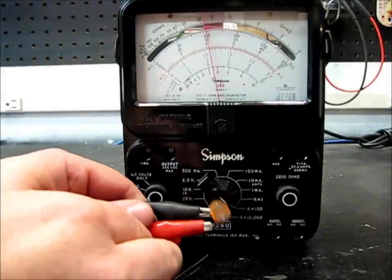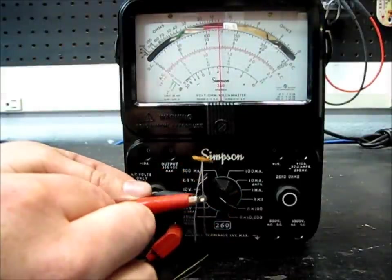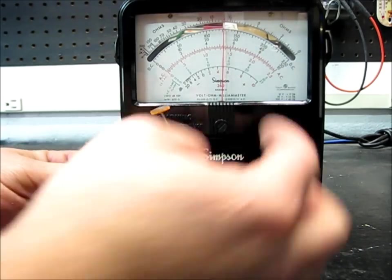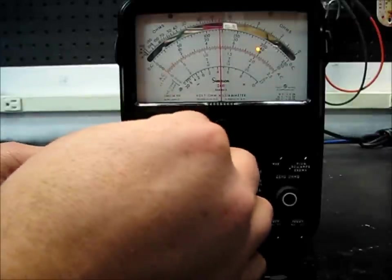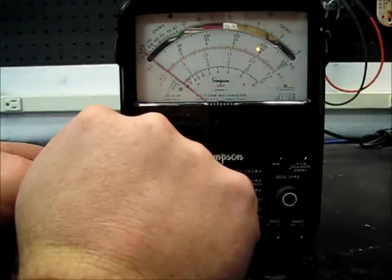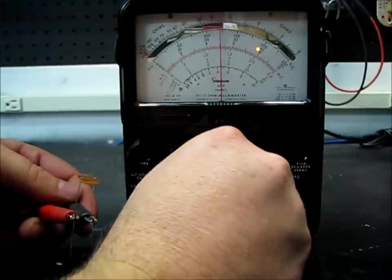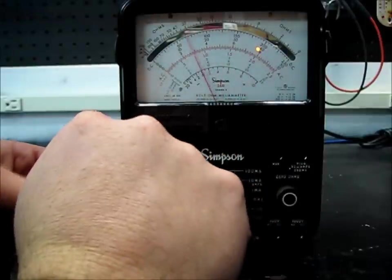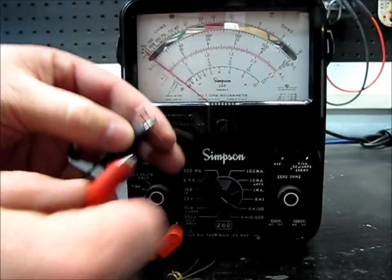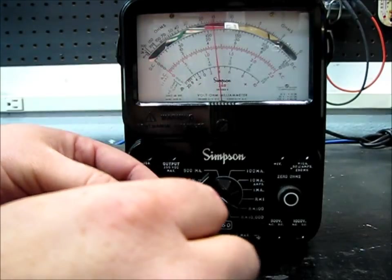When the LDR is pointed at the light, we've got about 650 ohms. But cover it up and it's much more than 1000 ohms. Let's try this little guy—should be basically the same experience.